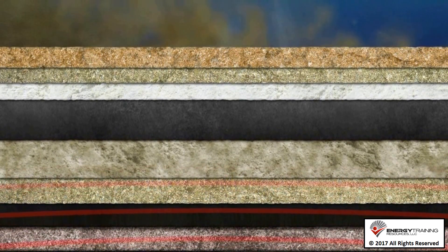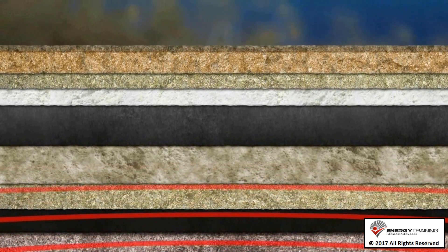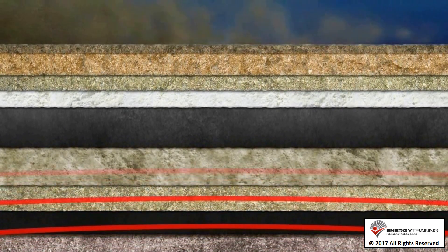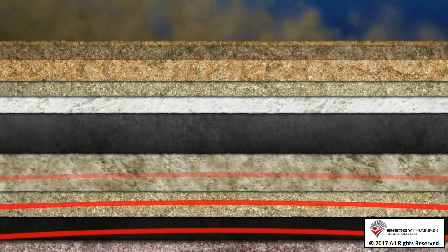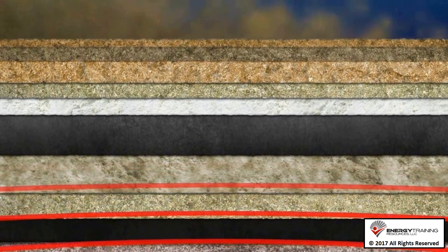If the organic shale becomes deeply buried over millions of years, it will become exposed to increasing levels of the Earth's heat, and the organic matter will begin to convert into oil and gas.